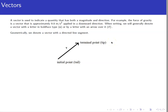From a geometric perspective, we use directed line segments to denote vectors. If I have a vector v, the length of the line segment indicates the magnitude of the vector, and we use an arrow to indicate direction. The vector starts at some point — called the initial point or tail — and ends at another point called the terminal point or tip. The arrow goes from tail to tip to denote the vector's direction.